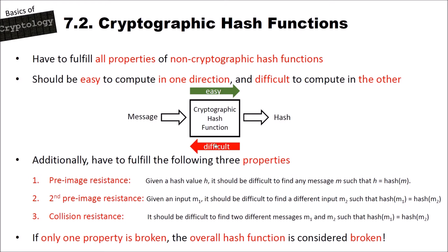Cryptographic hash functions have to fulfill three properties. The first is pre-image resistance: given a hash value h, it should be difficult to find any message m such that h equals hash(m). This is the difficult direction going from right to left. It should be essentially impossible to find any message — not necessarily the original — that produces that hash value.